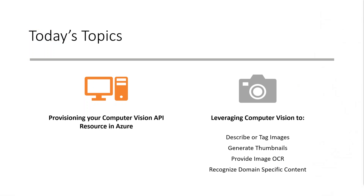What we're going to be discussing first is provisioning your Computer Vision API resource in Azure. Don't let Azure intimidate you — this is all very much click-on, click-off kinds of things. The other thing we'll look at is how we use our Computer Vision API. There are flow actions we can use for this: you can use it to describe or tag images, generate thumbnails, provide image OCR, and more.